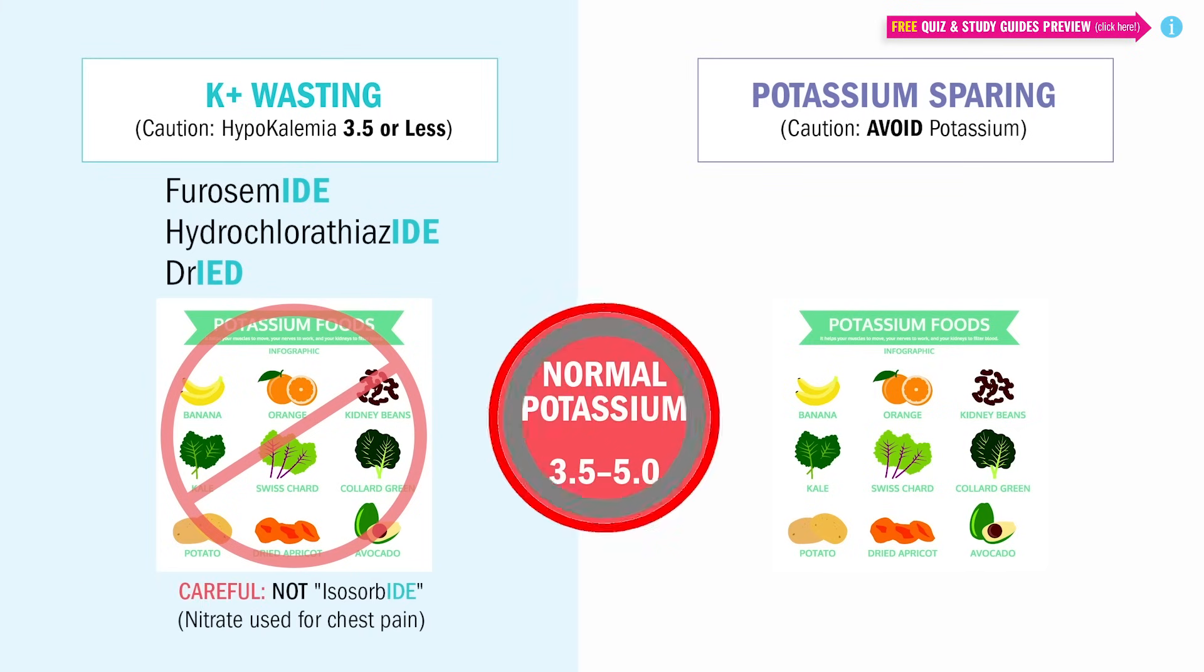We only give potassium wasters if potassium is normal between 3.5 and 5.0. Anything less than 3.5 is a big no-no. You don't give the drug.